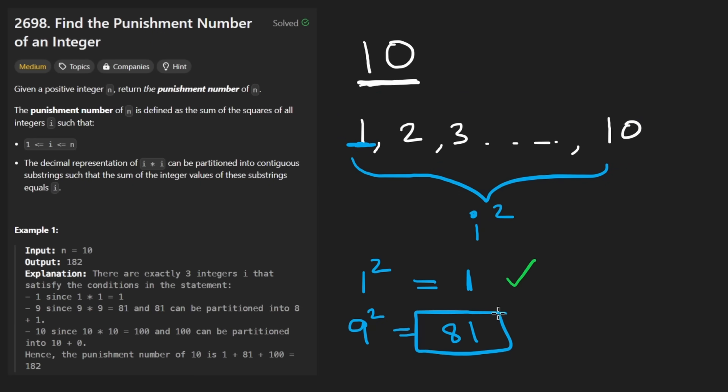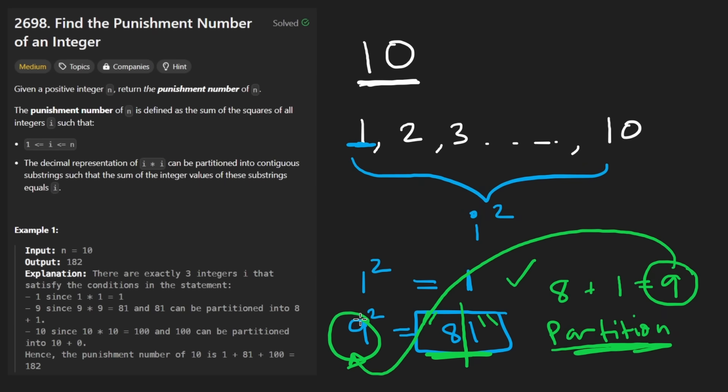Now, there's all sorts of ways to partition this string. Suppose it's in the form of a string, which is pretty easy to do. Suppose it's a string. We partition it, meaning you either take the entire string, that's 81, or you partition it like this, where you put 8, and that's just an integer, plus 1, just an integer, and then you get 9. And so it seems that there is a way to partition the result, which is 81, such that we get the original number 9. Not 9 squared, but 9 itself.